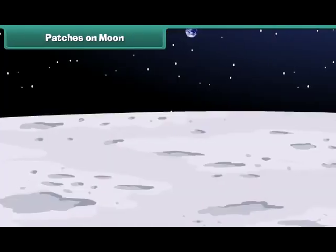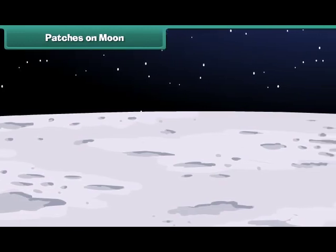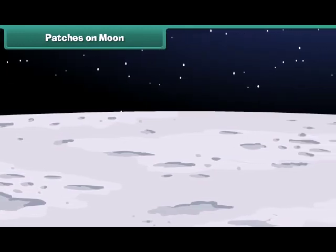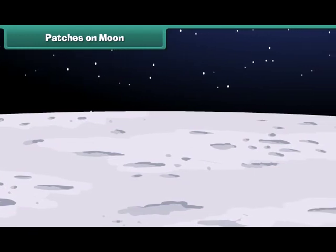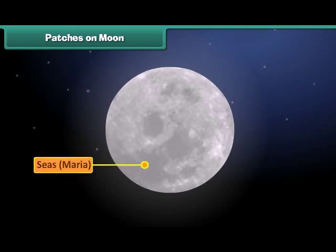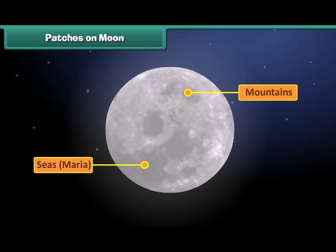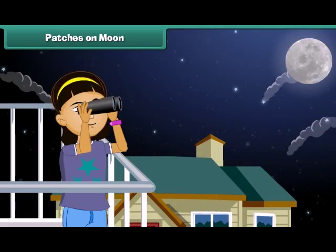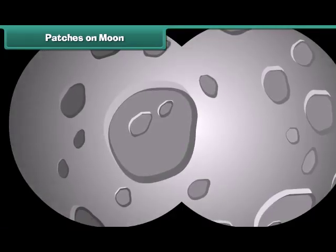Even though there is no liquid water on the moon, it has many interesting features such as craters, mountains, and lava plains. The dark patches on the moon's surface are plains called seas or maria. They are called maria because early astronomers thought these areas were great seas. The lighter patches are mountains, and you can use a pair of binoculars on a clear night to see the craters formed by ancient meteor collisions.